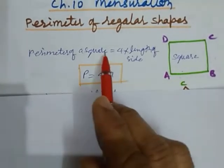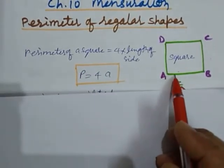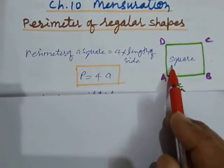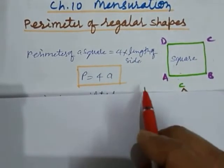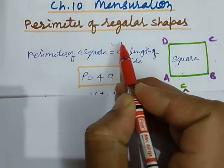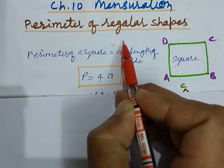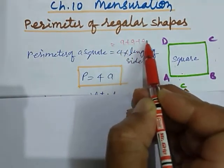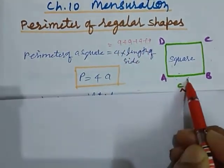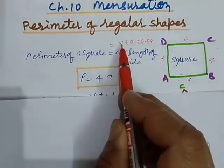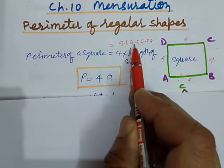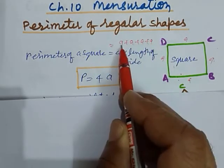So perimeter of a square is sum of all four sides which we can write as 4 into length of side. Why? Because side a plus a plus a plus a. If the side of this is a, then by adding all the sides we get a plus a plus a plus a. That is 4a.